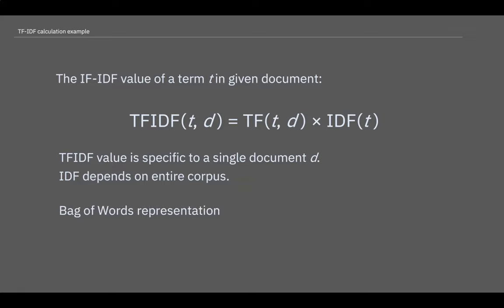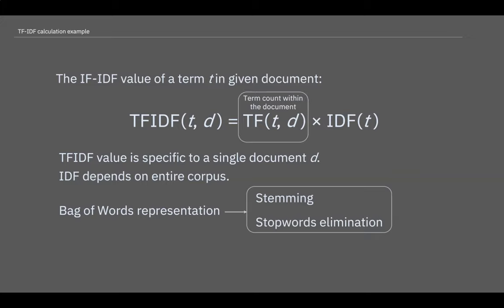Systems employing bag-of-words representations typically go through steps of stemming and stop-words elimination before doing term counts. Term counts within the document form the TF-values for each term and the document counts across the corpus form the IDF-values.